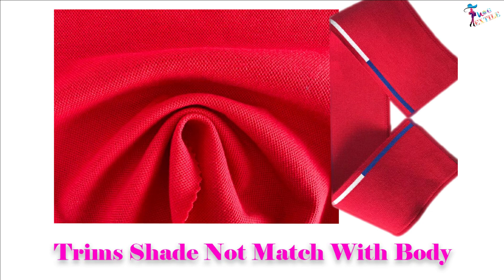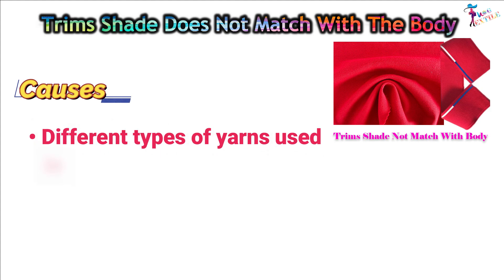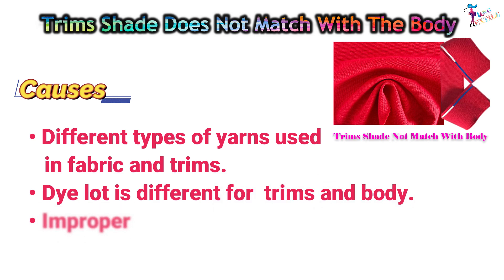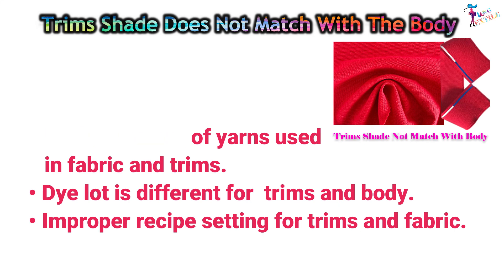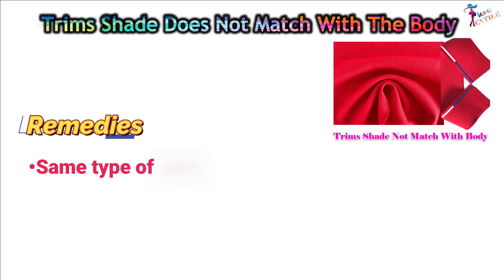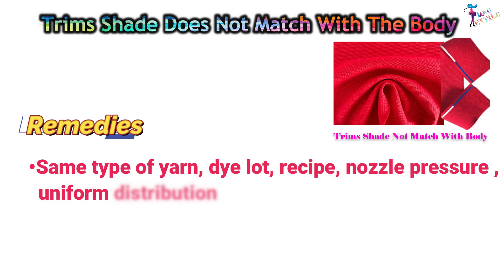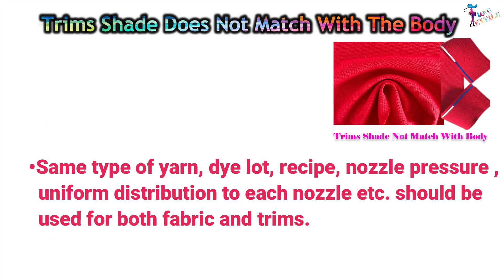Trim's shade does not match with the body. Causes: Different types of yarns used in fabric and trims, dye lot is different for trims and body, and improper recipe setting for trims and fabric. Remedies: Same type of yarns, dye lot, recipe, nozzle pressure, uniform distribution to each nozzle, etc., should be used for both fabric and trims.